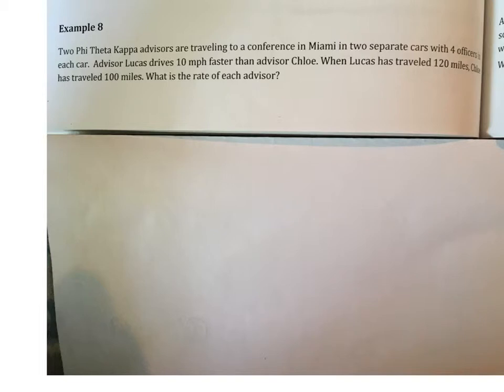Alright, example 8 is at the bottom of page 164. It says two Phi Theta Kappa advisors are traveling to a conference in Miami in two separate cars with four officers in each car. Advisor Lucas drives 10 miles per hour faster than Advisor Chloe. When Lucas has traveled 120 miles, Chloe has traveled 100 miles. What is the rate of each advisor? Alright, so for this question, we're going to first set up some equations for Chloe. Distance equals rate times time. That's the distance equation. For Lucas, the same thing. Distance equals rate times time.